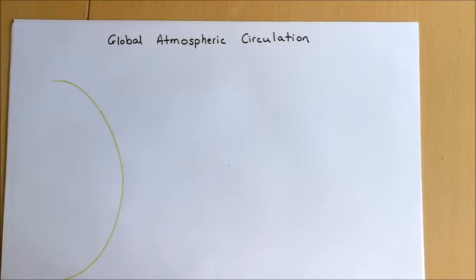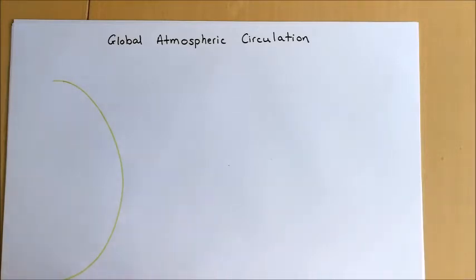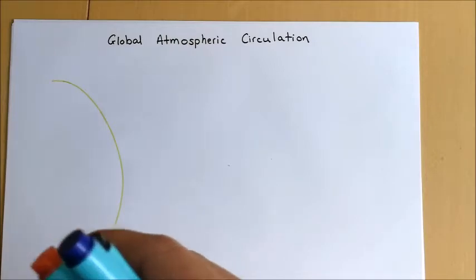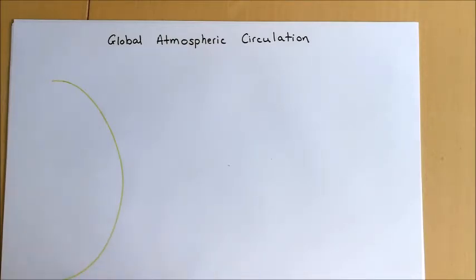This video is going to look at the global atmospheric circulation. This is a really fundamental principle of geography and underpins a huge amount of what we do in physical geography. It's relevant to talking about where our ecosystems are located and also relevant in terms of the track or route that our tropical storms or hurricanes take.